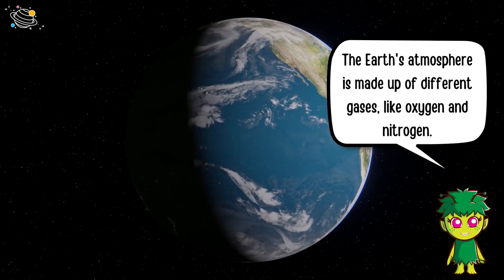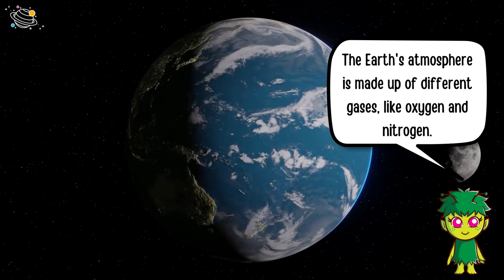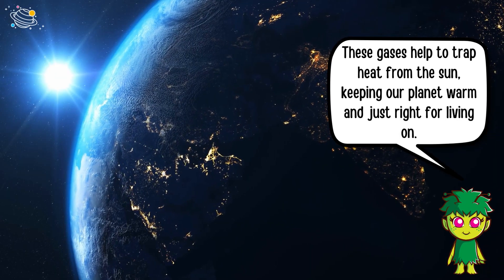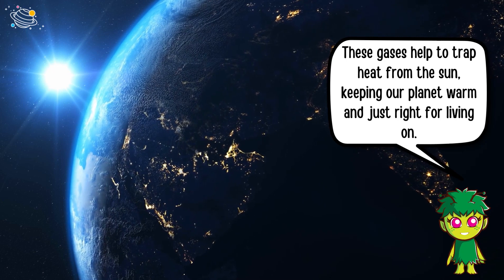The earth's atmosphere is made up of different gases like oxygen and nitrogen. These gases help to trap heat from the sun, keeping our planet warm and just right for living on.